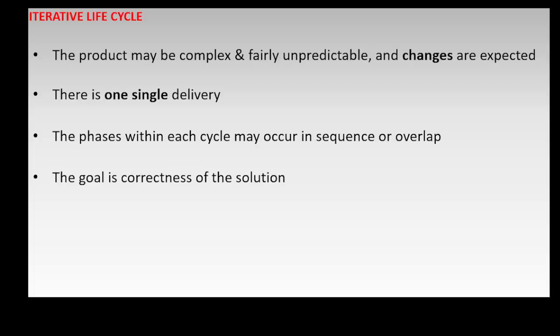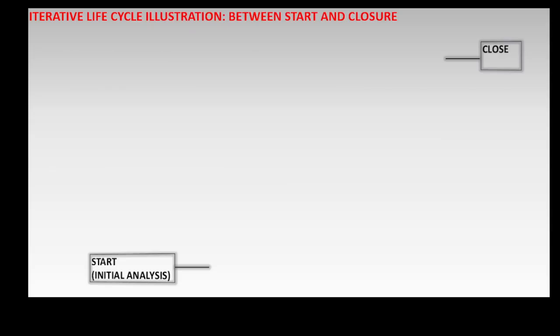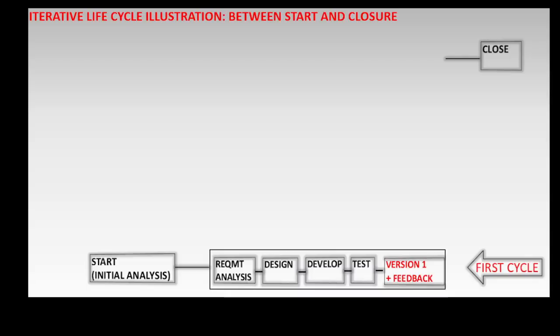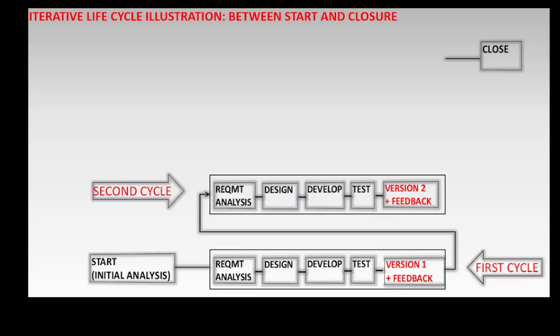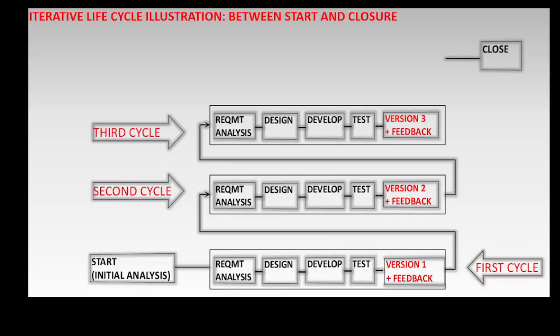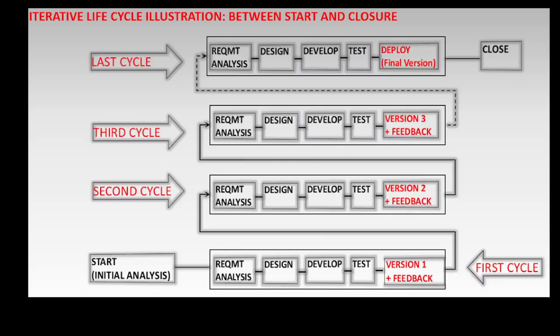Prototyping and spiral models follow the iterative life cycle. From this diagram, between the start and close of the project, in the first cycle, the first product version is created but not deployed, and feedback is received. This feedback is used to modify the first product version in the second cycle, and new features could also be developed to create a second product version, which is not deployed, but feedback is received. Likewise, in the third cycle, the third product version is created and feedback is received. The phases are repeated in subsequent cycles up to the last cycle, when the final or desired product version is created, accepted, and deployed.